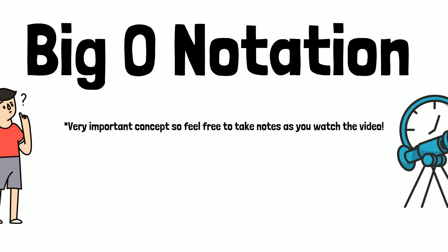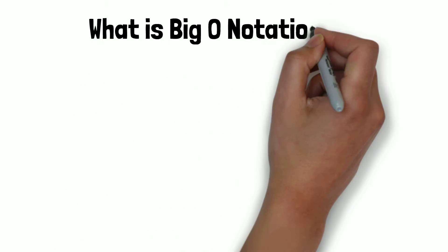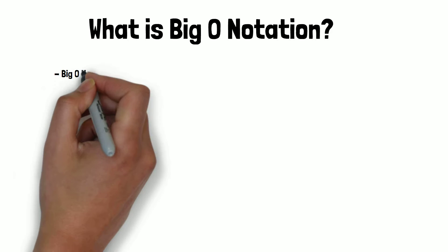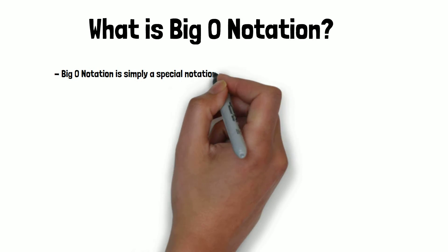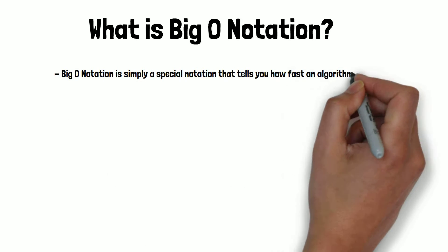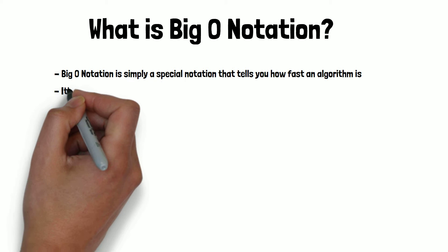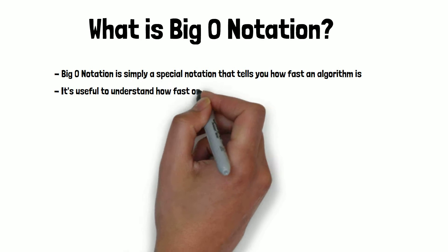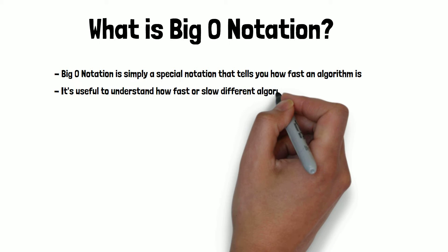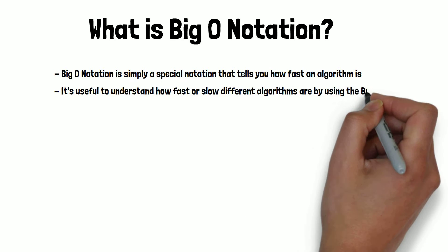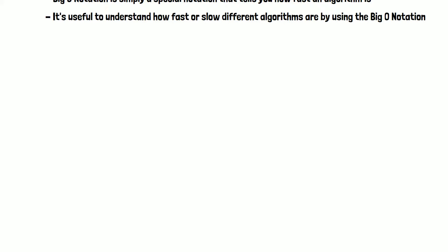Now, let's start with the basics. What is Big O notation? Big O notation is simply a special notation that tells you how fast the algorithm is. Well, why do we care? It is nice to understand how fast or slow other people's algorithms are.